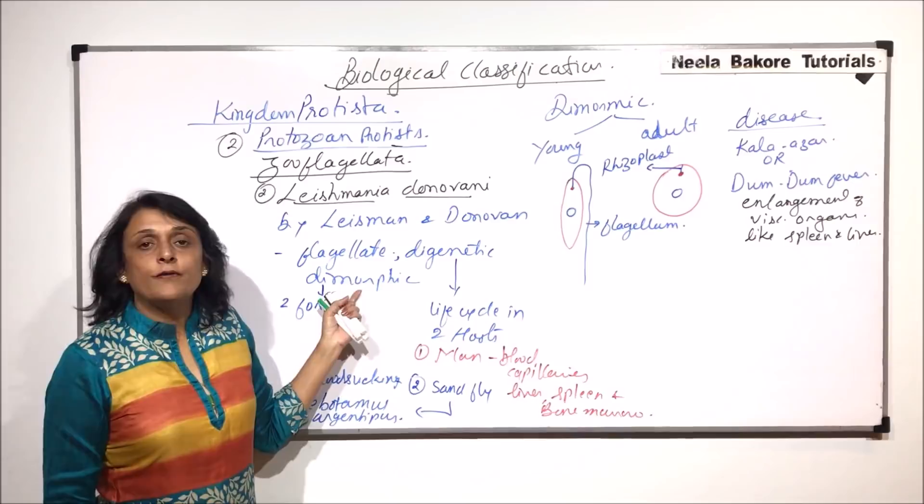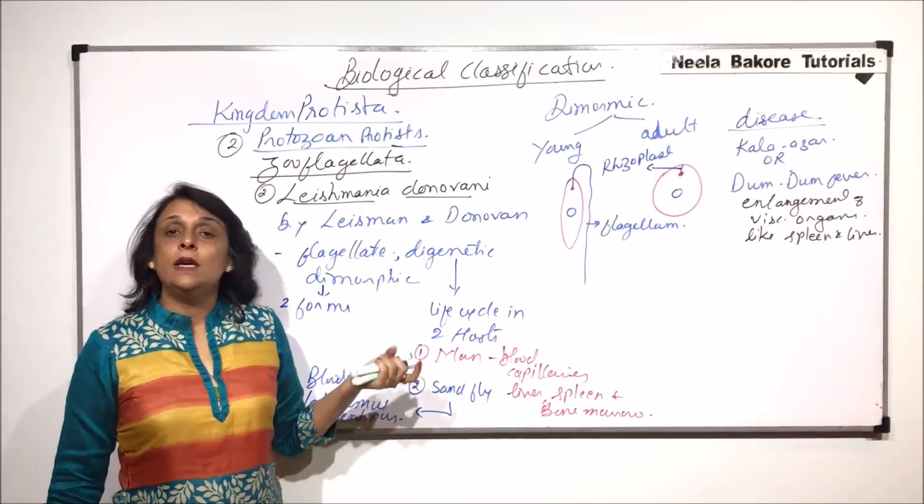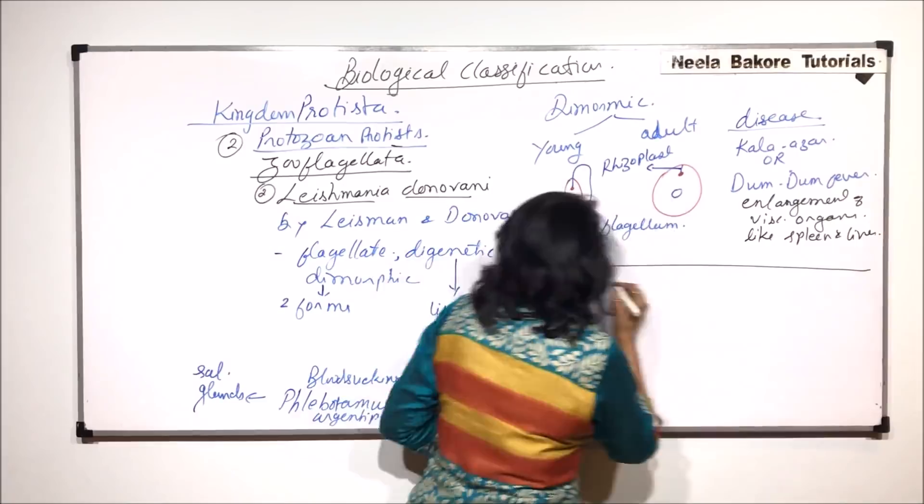So this is digenetic, dimorphic flagellate. And it is a parasitic organism. It is found inside the body and causes disease, named after the scientists who actually discovered it. So this is about Leishmania donovani which comes into Zooflagellata. We'll talk about one more example.